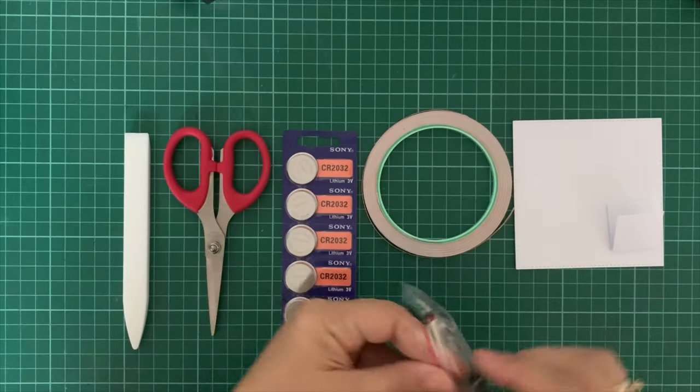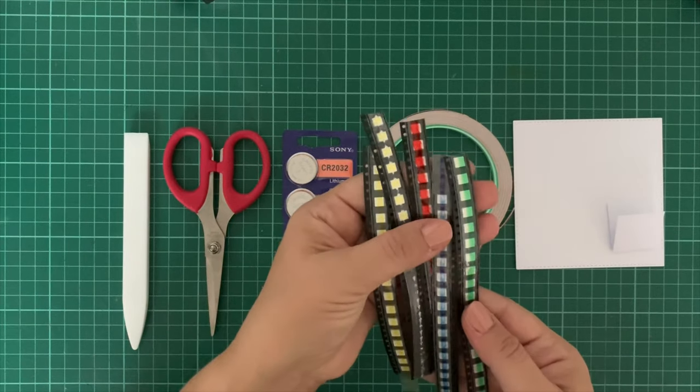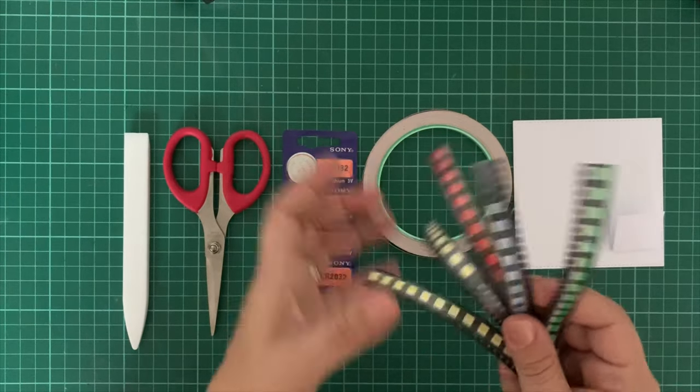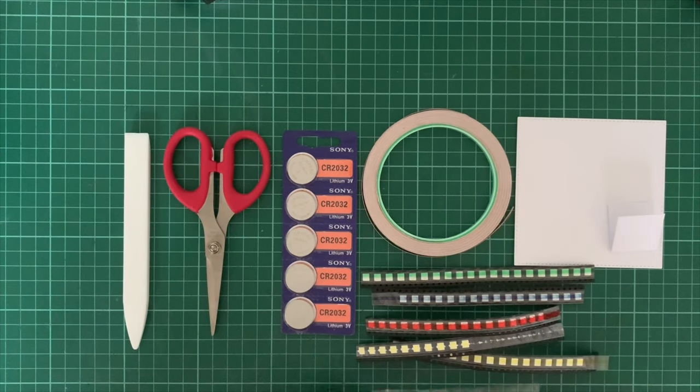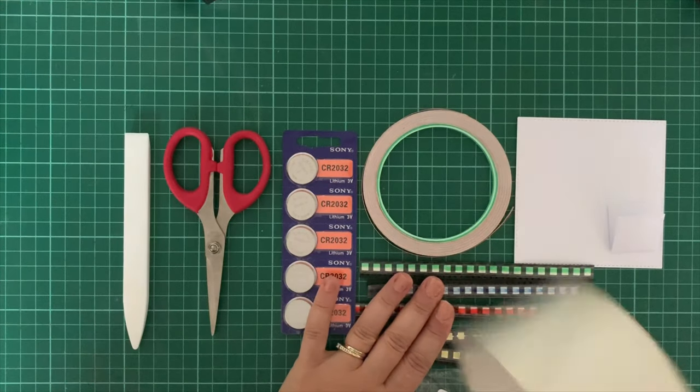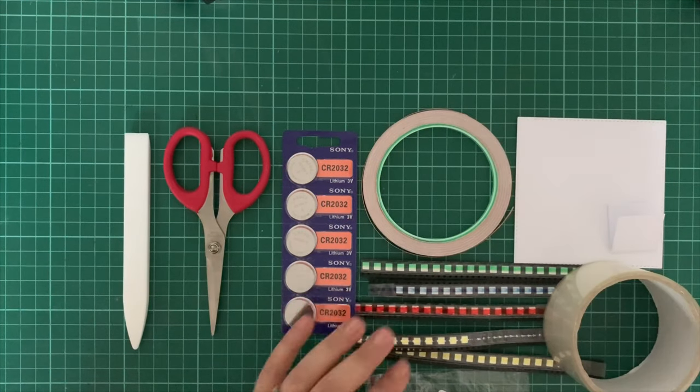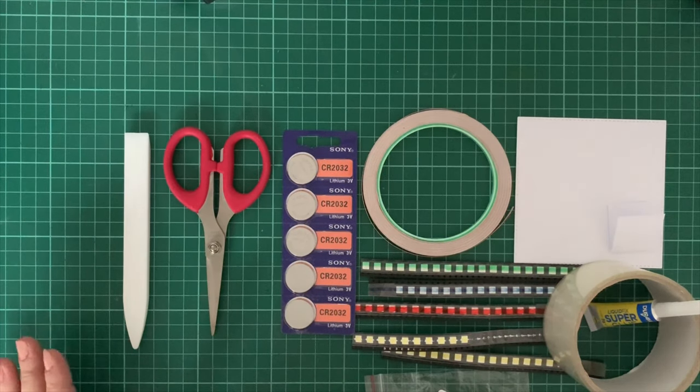Then you'll need the 5050 SMD LEDs like you see here. These come in strips with the plastic protective covering over the front that you lift up to pop the LEDs out. Then you'll require some packing tape or sellotape to secure the LED down, or you can use super glue. And that's a basic summary of the equipment required.